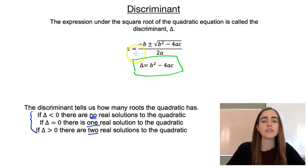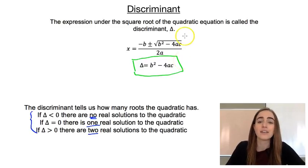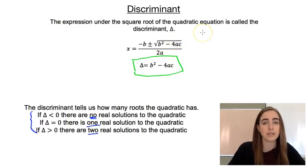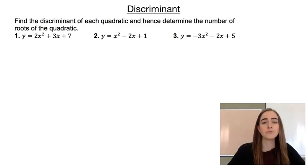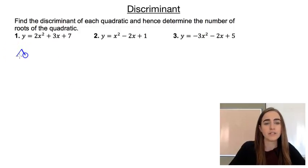So we don't have to look at the whole quadratic formula. We don't actually have to figure out what the solutions are or what the x-intercepts are. But if we just want to know how many there are, then we can just look at the discriminant. So we've got three examples. We're going to go through and find the discriminant of each one to determine how many roots or x-intercepts it has.